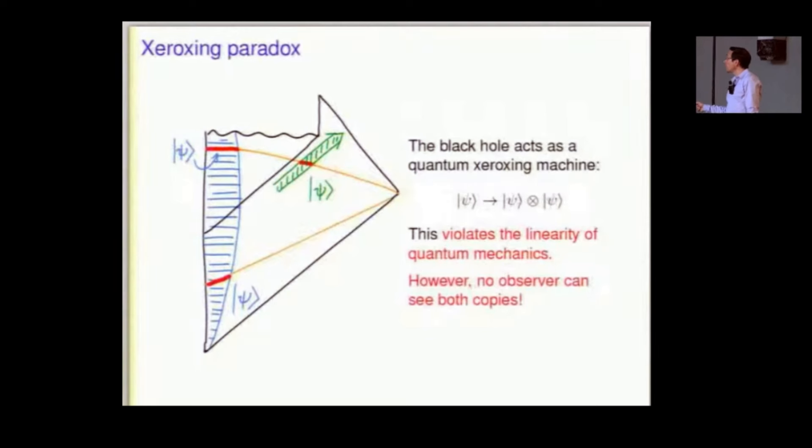And, again, you're starting to see a pattern here. No observer can see both copies. You know, to see both copies, you'd have to find a past light cone of some point in this diagram that contains both copies. And, as you can see, there isn't one.